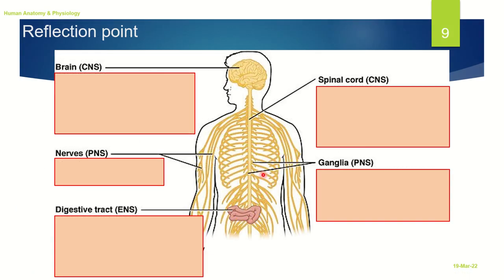Let's take a pause here. I would like you all to note down the different functions or roles of the brain, the nerves, the digestive tract, the ganglia and the spinal cord — whatever we have discussed so far. After you have successfully solved this reflection point, you can move to the next slide.